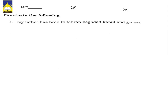Write this question on your notebook: 'Punctuate the following.' Sentence number one is: 'My father has been to Tehran, Baghdad, Kabul and Geneva.' The first letter M is capitalized. There are multiple names of different cities, so we put commas between them. They are proper nouns, so we write them with capital letters. This is a simple statement, so we put a full stop at the end.